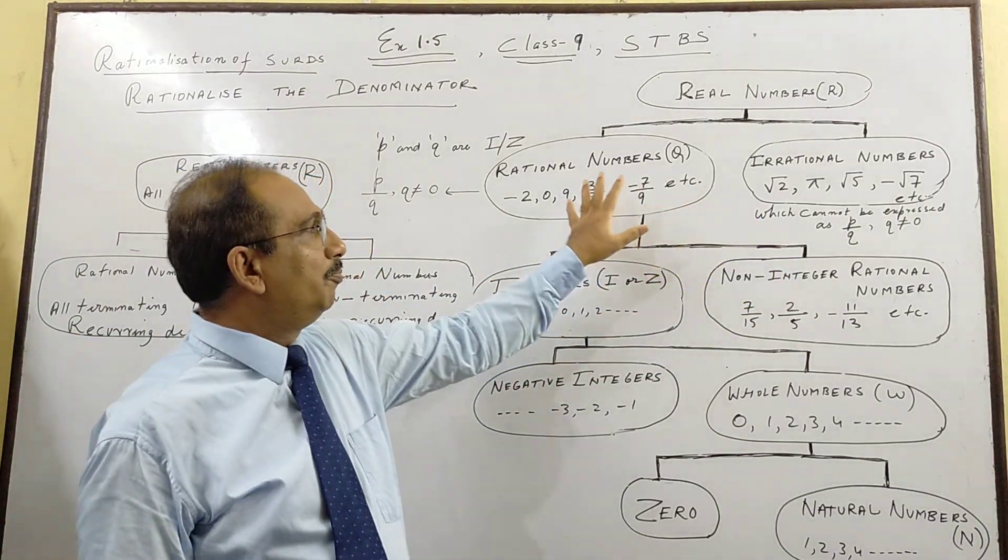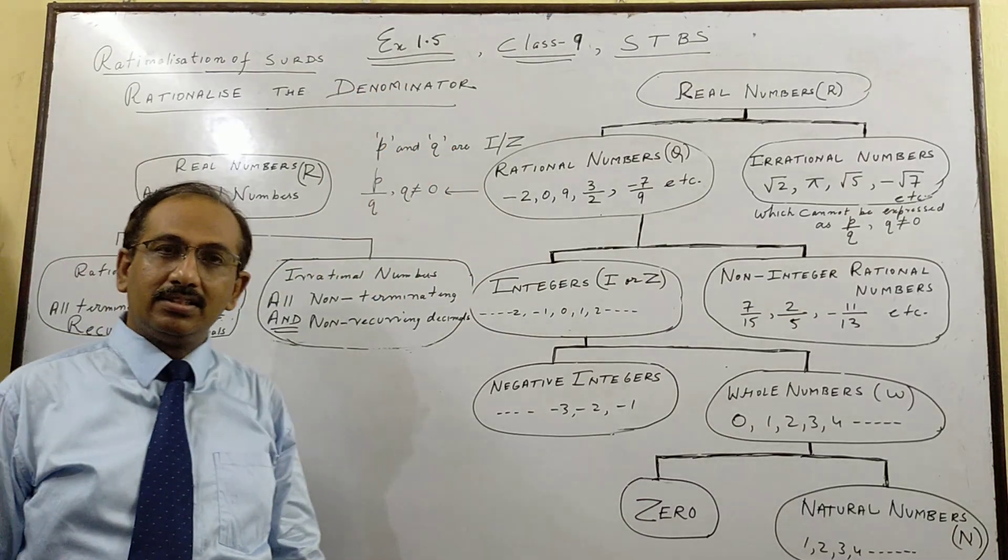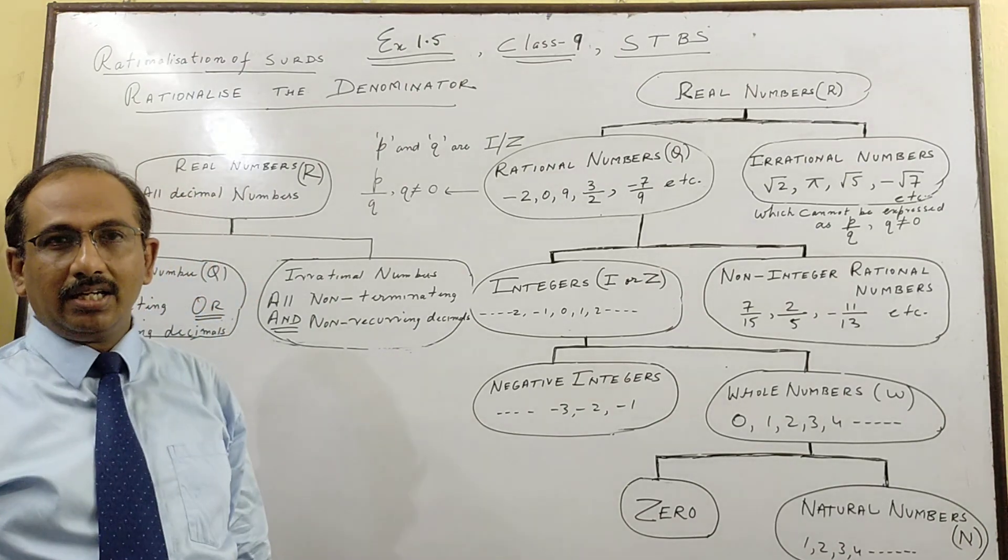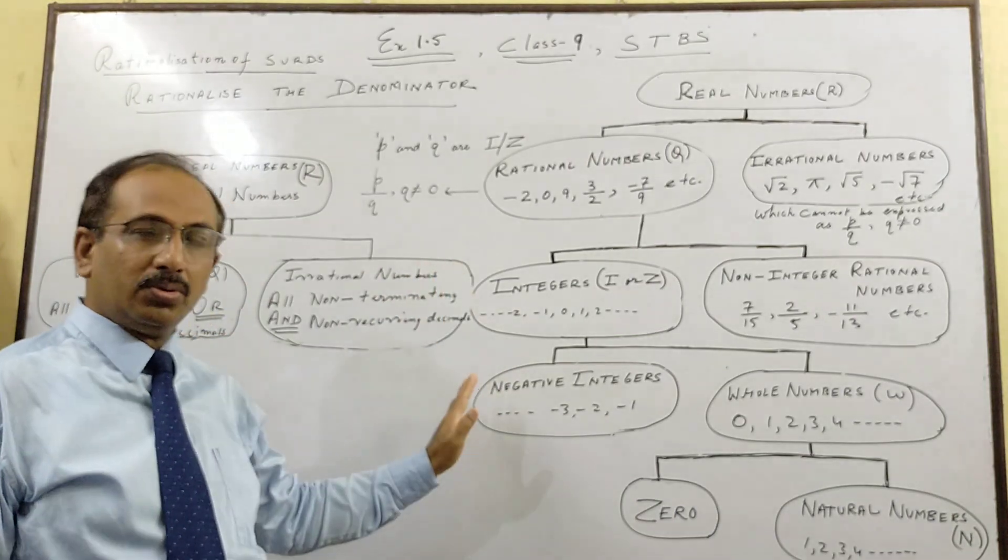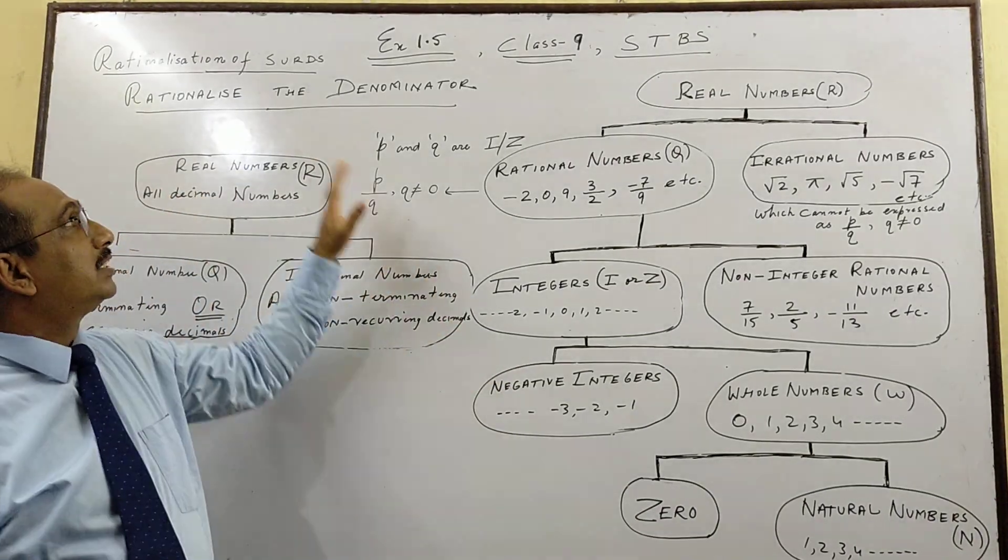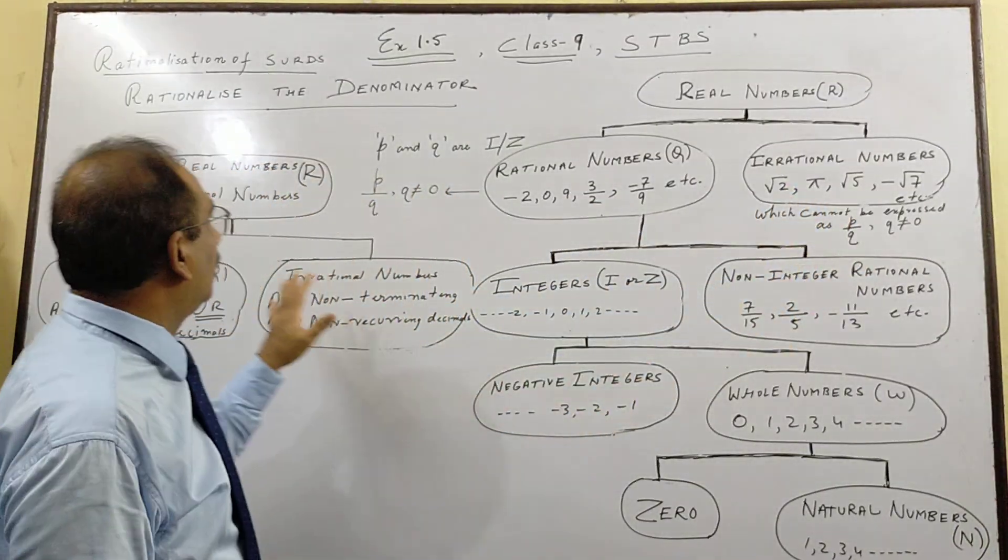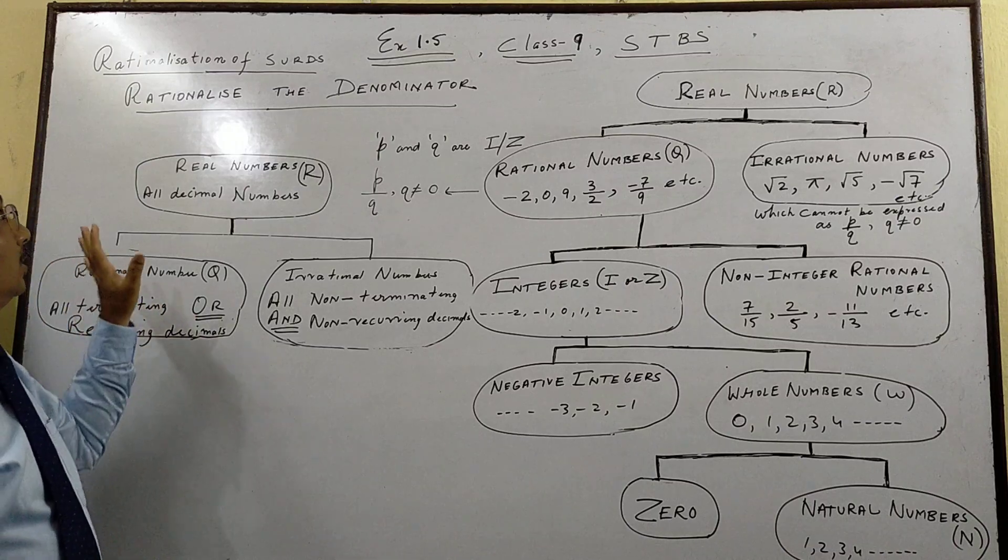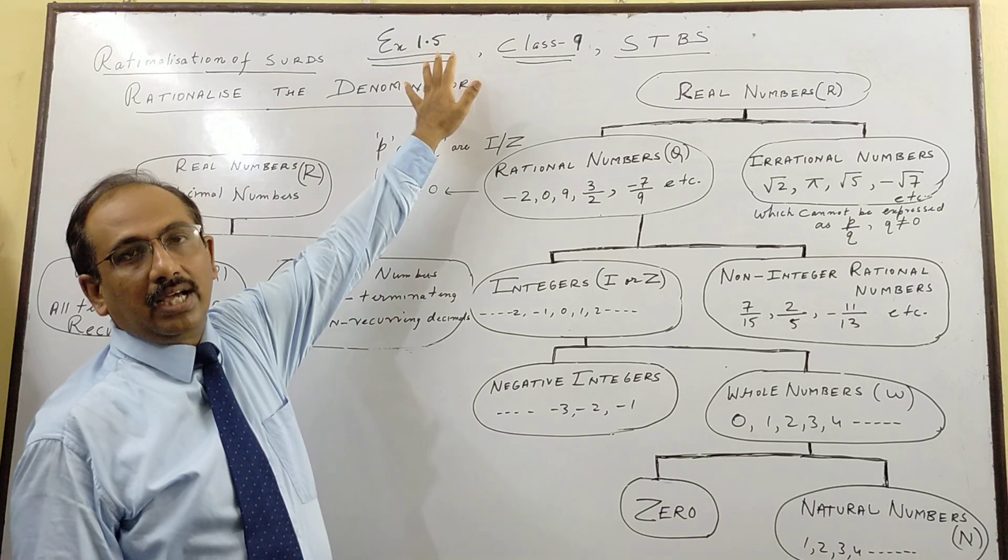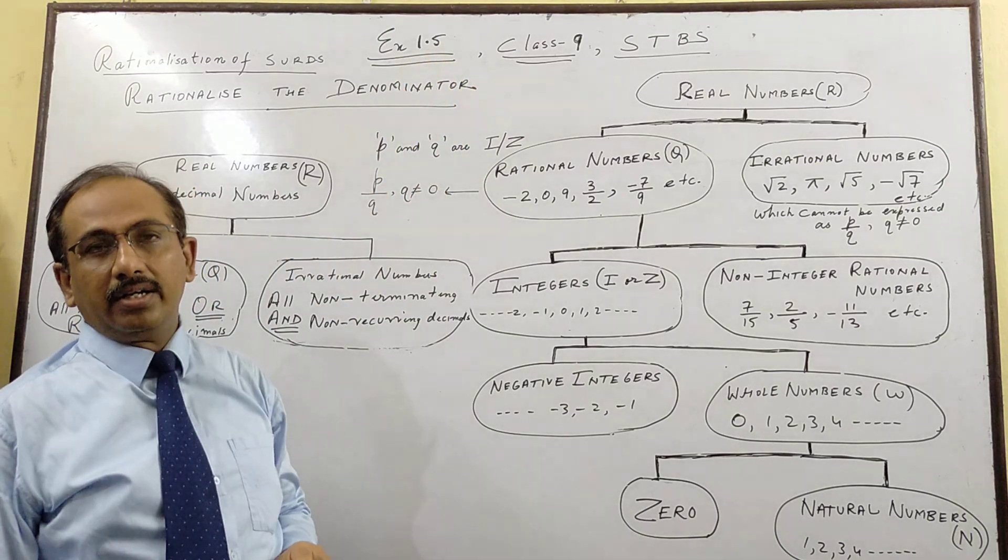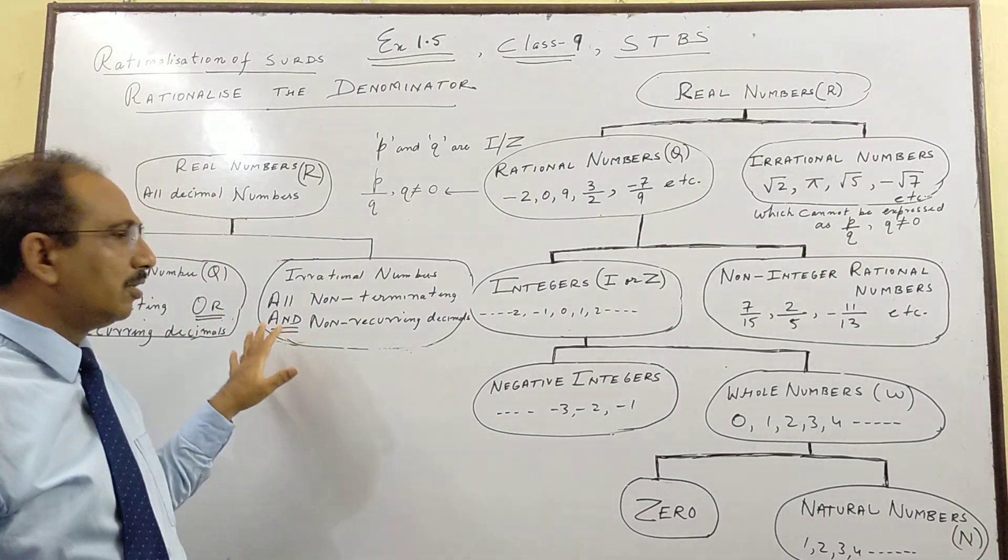So before I go to the 5th part which is exercise 1.5, which is very easy and very interesting because this topic has lot of things, we will do that slowly. But before that, we will first see what are Rational Numbers and Irrational Numbers. Then today we will see how we rationalize the denominator which is exercise 1.5 in your textbook. So let us start this chapter by first learning the concepts.